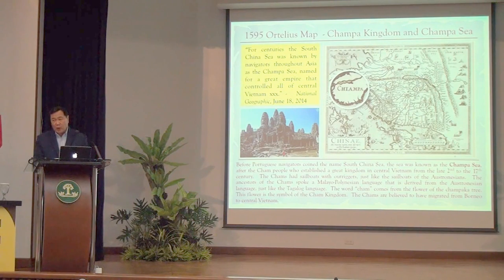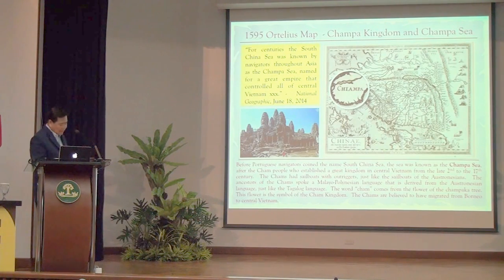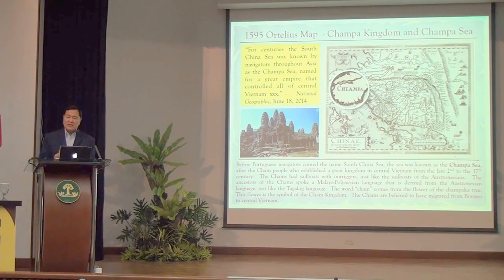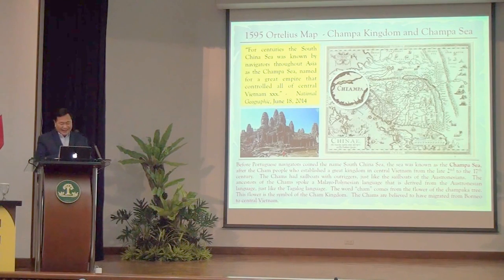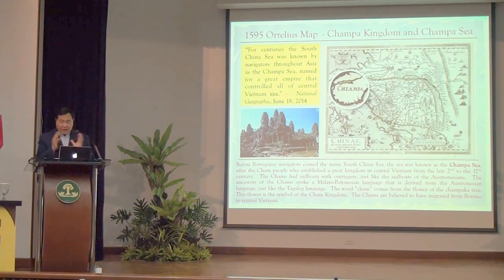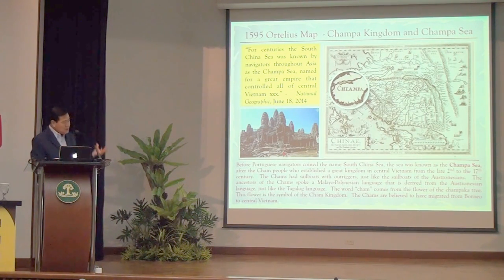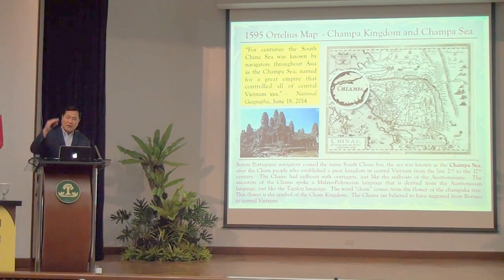The Chams are considered Austronesians, believed to have migrated from Borneo to central Vietnam. The Austronesians constituted the largest and widest migration by sea of human beings — with the sailboat and the outrigger, they were able to populate the entire South China Sea, Central Vietnam, Peninsular Malaysia, Sabah, all of Indonesia, Micronesia, Polynesia, all the way to Madagascar, Hawaii, and Easter Island off the coast of South America. We are the descendants of the Austronesians, sharing the same root Austronesian language.